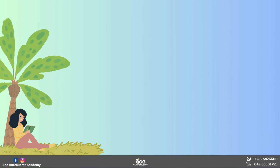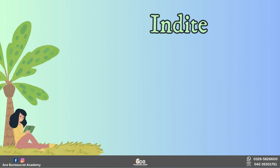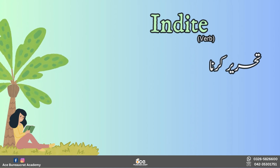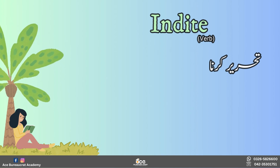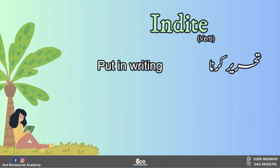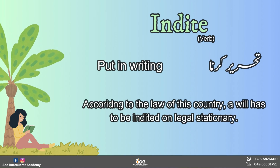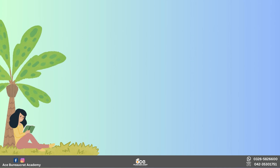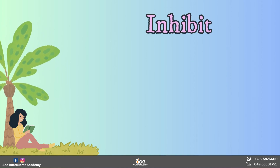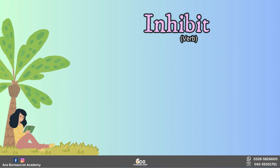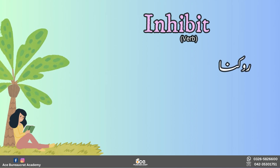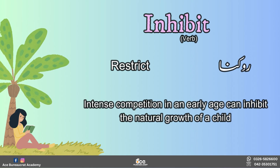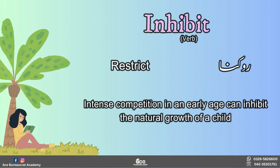चलें आज का third word देख लेते हैं and that is 'inhibit'. ये एक verb है। इसका उर्दू meaning है 'تحریر کرنا'۔ इसका English meaning है 'restrict'. चलें इस word को sentence में यूज़ करते हैं: 'Intense competition at an early age can inhibit the natural growth of a child.'